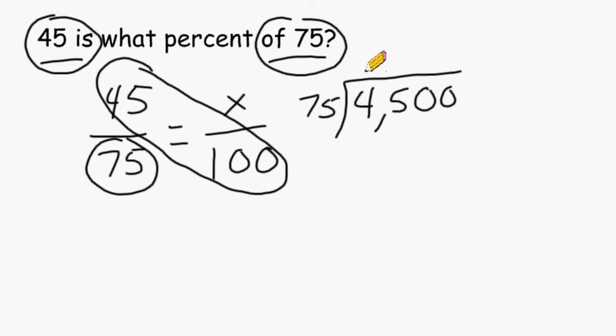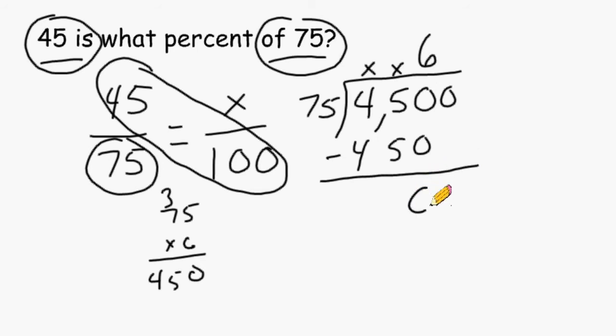75 cannot go into this place value or this, but 75 can be divided into 450. And I estimate that 75 can be divided into 456 times. And 75 goes into 450 exactly six times. So we write the product of 6 times 75 on the bottom and subtract, which leaves us with nothing. But we still have one more place value to deal with. So we bring down that 0, and because 75 does not fit into nothing, we have to put a 0 in this place value right here.